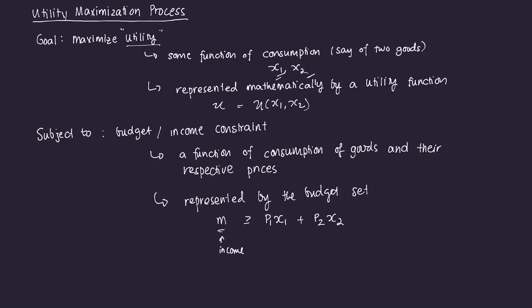We formalize this relationship mathematically in terms of a utility function. We have a utility function U, and U is some function of good one's consumption and good two's consumption. If I increase the consumption of good one without changing good two's amount, I should expect that my utility will increase. So utility generally increases if I increase the consumption of the goods.